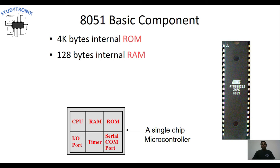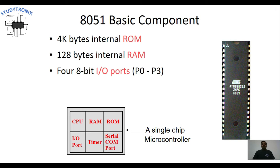The next peripheral is RAM. RAM is generally used for storing temporary data, so it is also called data memory. The capacity of RAM present in 8051 is 128 bytes.